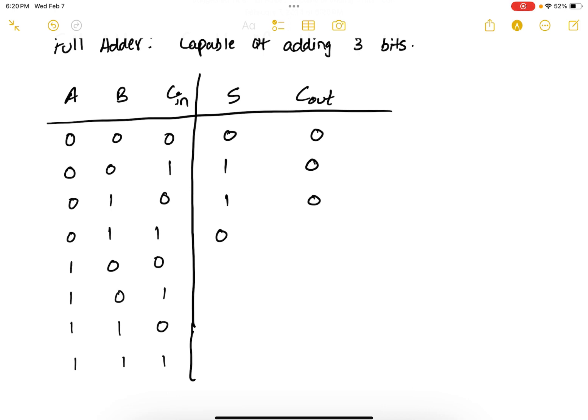So sum is zero, carry is one. One zero zero: sum is one, carry zero. One one zero: sum is zero, carry one. One one zero: sum is zero, carry one. And one one one: sum one, carry one.